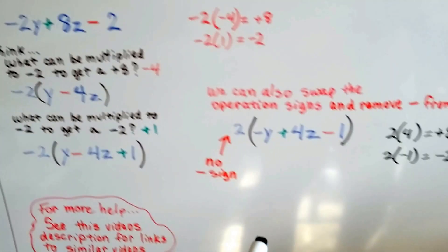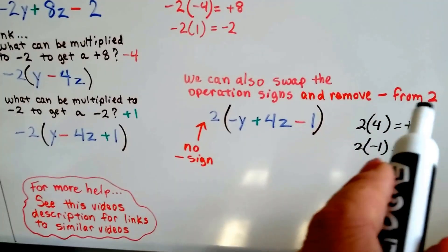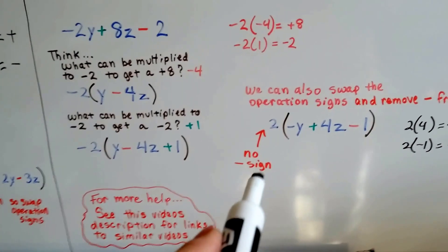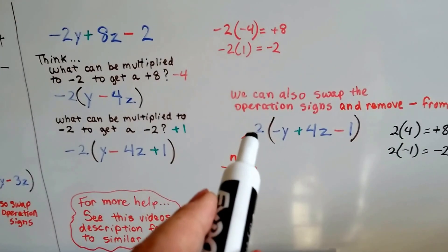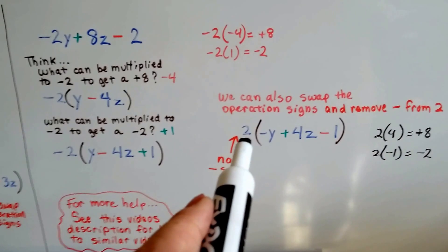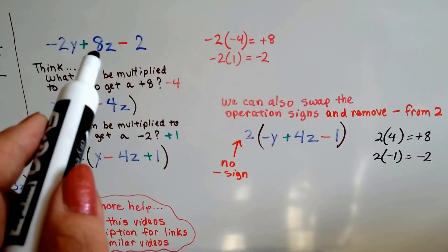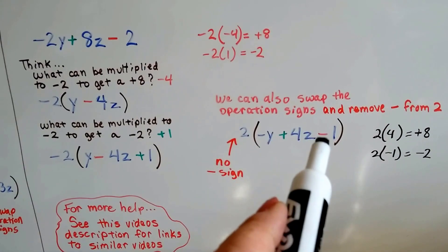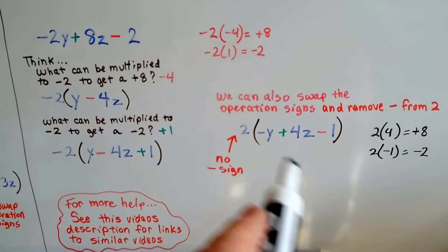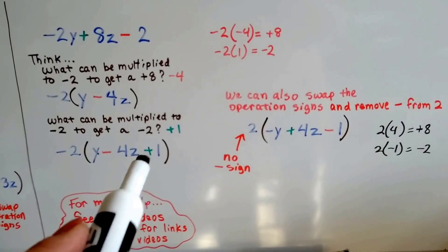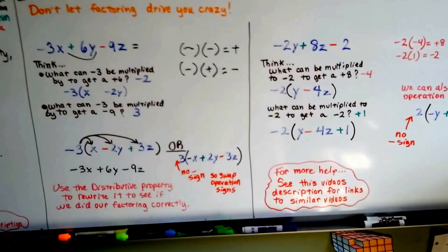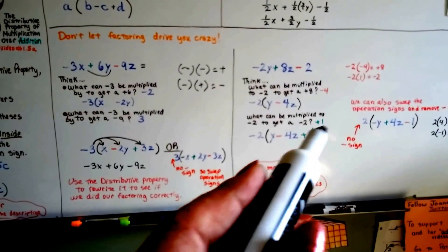Negative two times y gets us negative two y; negative two times negative four z gets us positive eight z; negative two times positive one gets us negative two. We can also swap the operation signs and remove the negative sign from in front of this two. Over here we had the negative sign in front of the two; now there's no sign, it's just a positive two. Positive two times negative y gives negative two y; positive two times positive four z gives positive eight z; positive two times negative one gives negative two. So the signs swap: this is a plus and then a minus; this is a minus and then a plus, because we took that sign away from the front.